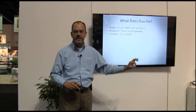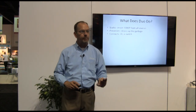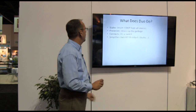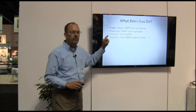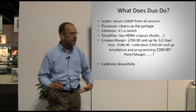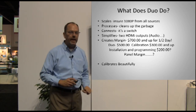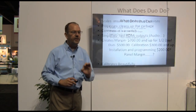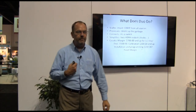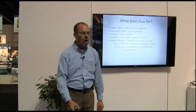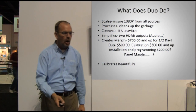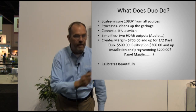I'm using a good, expensive processing engine instead of the $9 processing engine inside of the TV, the AVR, or the Blu-ray player. It's also great for connectivity — a great video switch with lots of inputs and outputs, including an output for just HDMI audio to send to my AVR. It simplifies things. My favorite part of the Duo: it creates margin — at least $700 in additional margin for less than half a day of work.